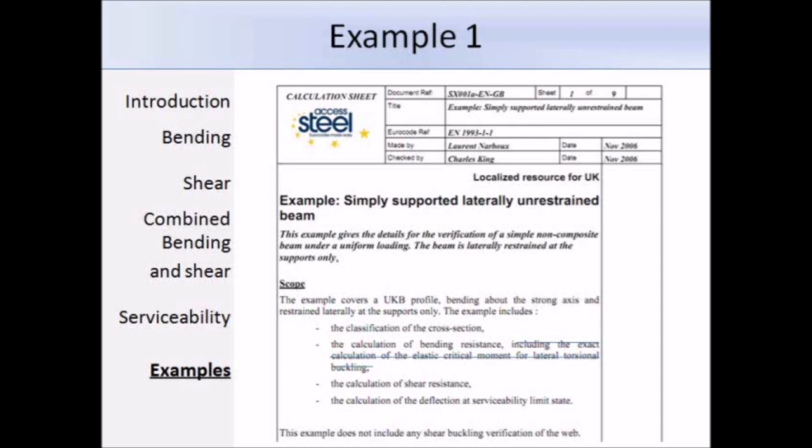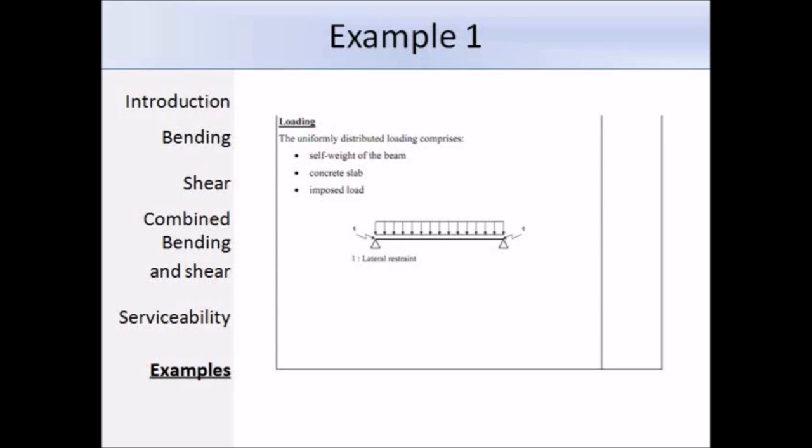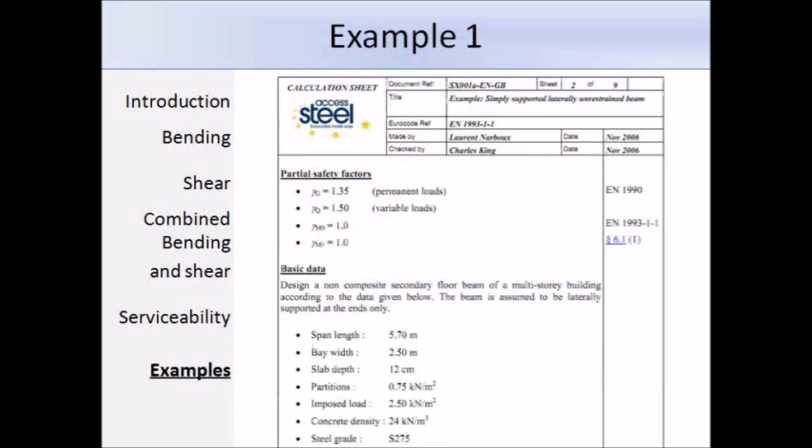Here is a diagram of the beam and the loading arrangement. It's simply supported and has a UDL. And here are the partial factors. The ones I've talked about are gamma-M0 and gamma-M1, and they're both equal to 1 according to both the UK National Annex and the Eurocode.